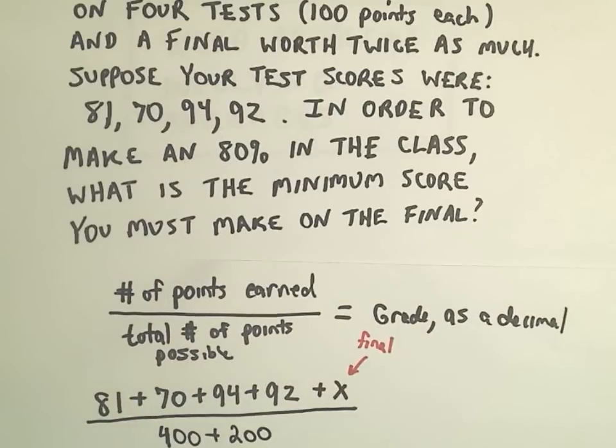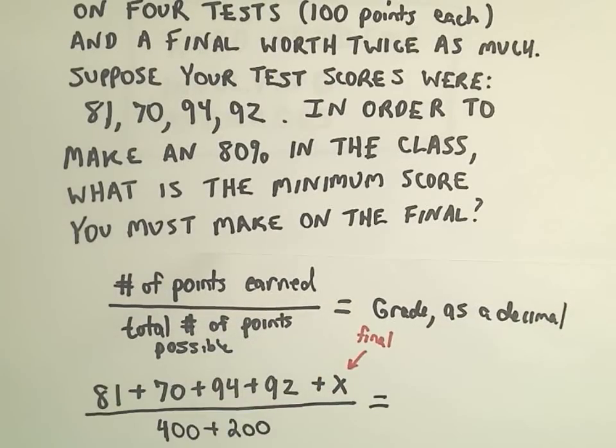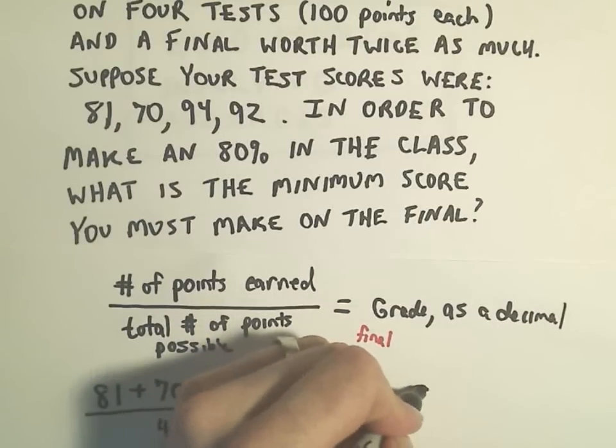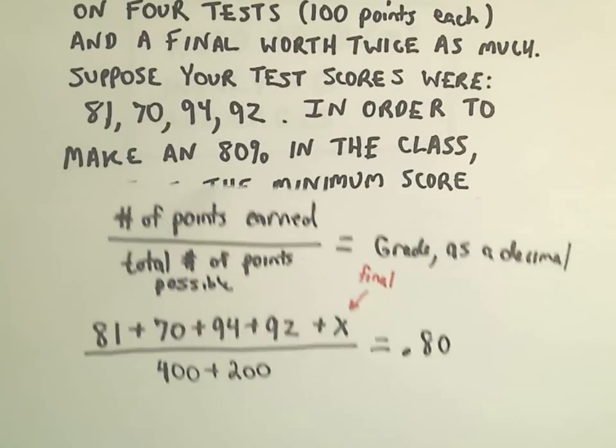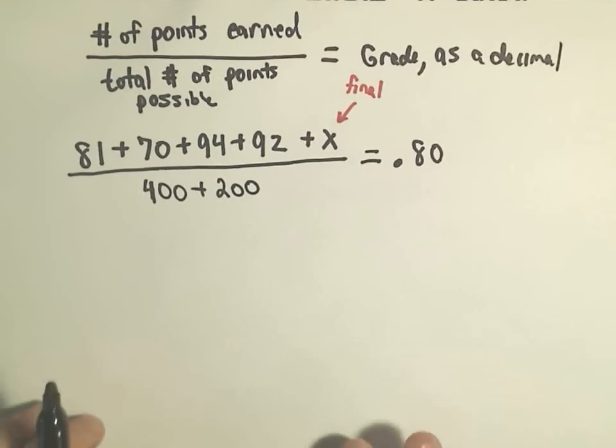But then you can also make an additional 200 points for the final, because again, it's counted for twice as much. And at the end of the day, we want that to equal an 80%, which as a decimal we could write as .80. So now we have our equation.